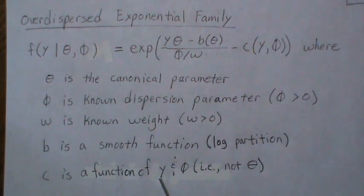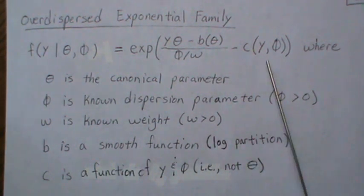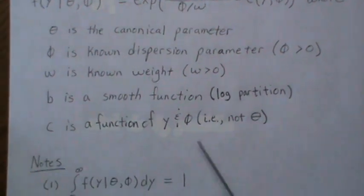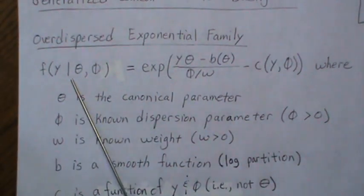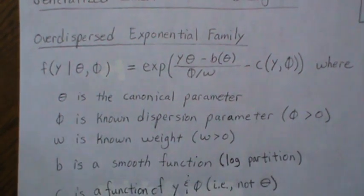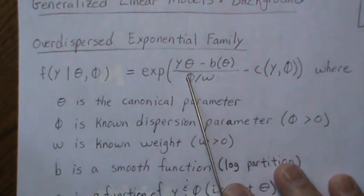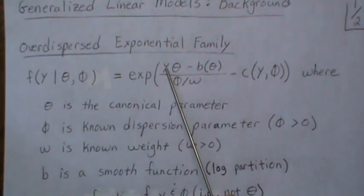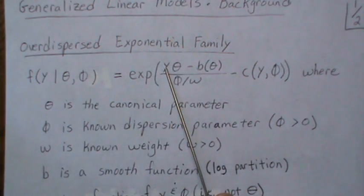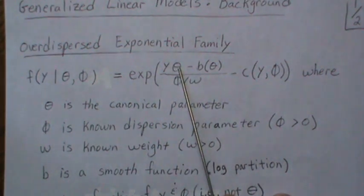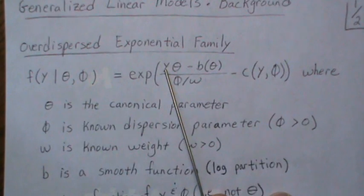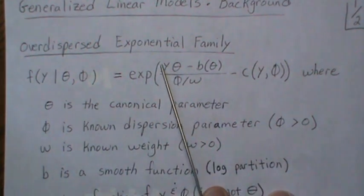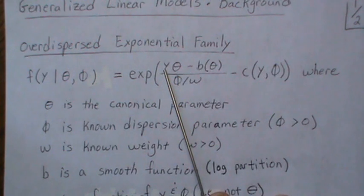C is just a function of y and phi, and importantly it's not a function of theta. Also note that y in the canonical form is the sufficient statistic, though sometimes in the exponential family that term can be a function of the data like log(y) — but in the GLM setting it just has to be y.